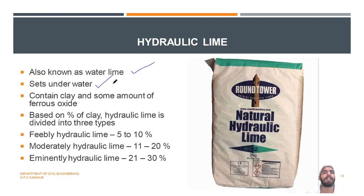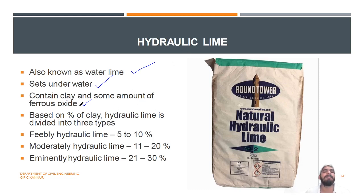Then comes hydraulic lime. Hydraulic lime contains clay and some amount of ferrous oxide. Unlike fat lime which comes from pure limestone, hydraulic lime applies to limestone containing some percentage of clay.